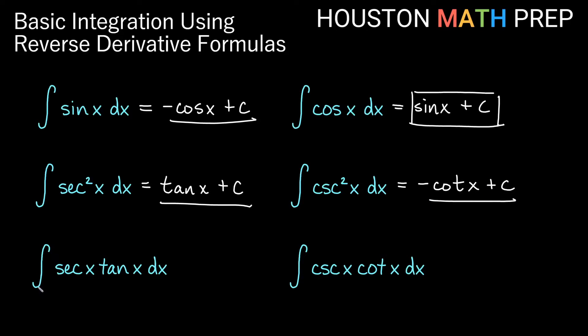And our last two here, the antiderivative of secant x tangent x, we should know that that is the derivative of secant x, I think. When we take the derivative of secant x, we get secant x tan x.